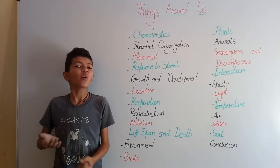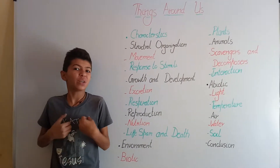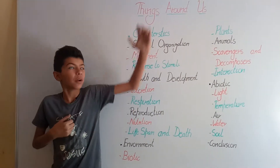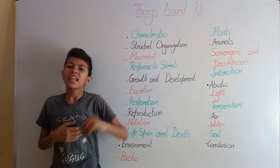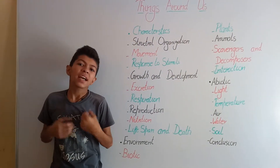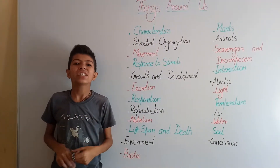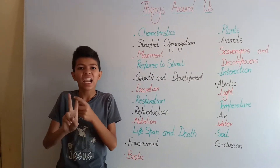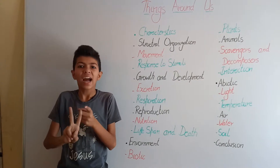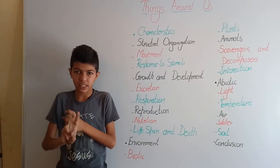Hello friends, today we are going to learn with Draven to cover the chapter Things Around Us. Things Around Us can be broadly classified into two types: living things and non-living things.